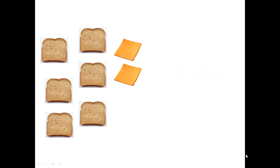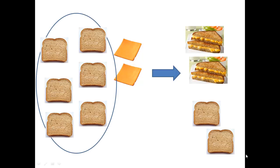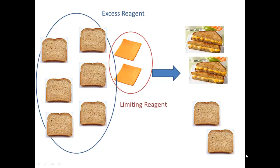Let's say you have six pieces of bread and two pieces of cheese in your fridge. How many grilled cheeses can you make? You cannot make as many as the bread suggests you can because you don't have enough cheese. You can only make two sandwiches, and that's going to leave you with two pieces of bread left over. This bread left over is called the excess reagent — a reagent that we have too much of.